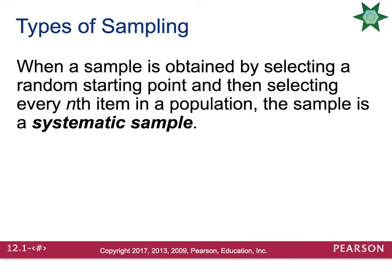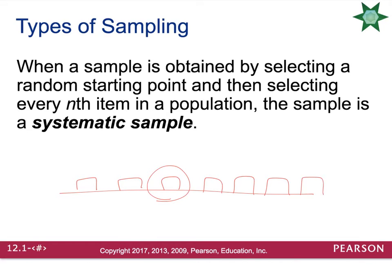When a sample is obtained by selecting a random starting point and then selecting every nth item in a population, the sample is called a systematic sample. An example of this could be an assembly line, where you look at every 13th item on the assembly line to see if it has the characteristics or if it fails your process as a qualified product.